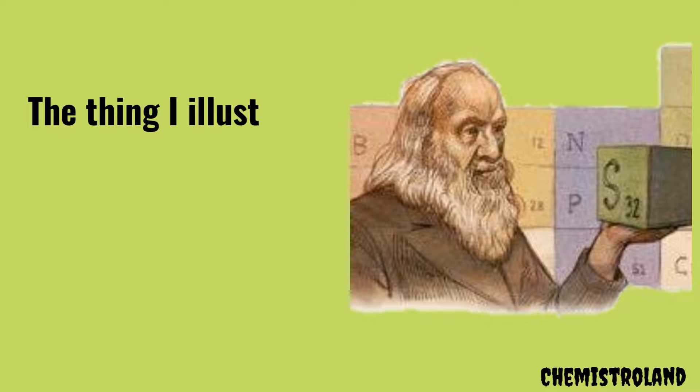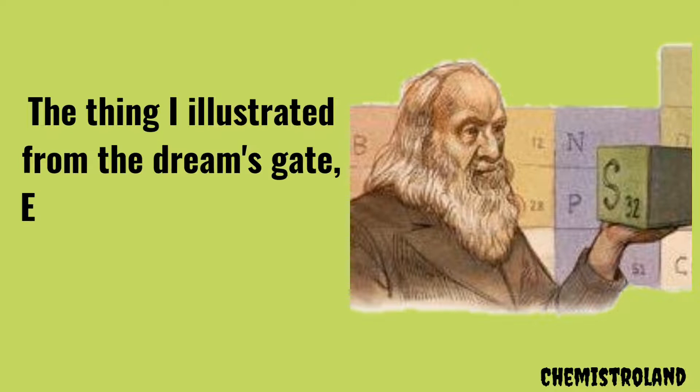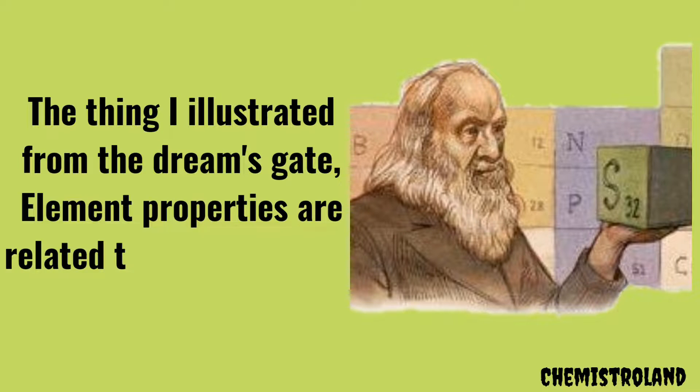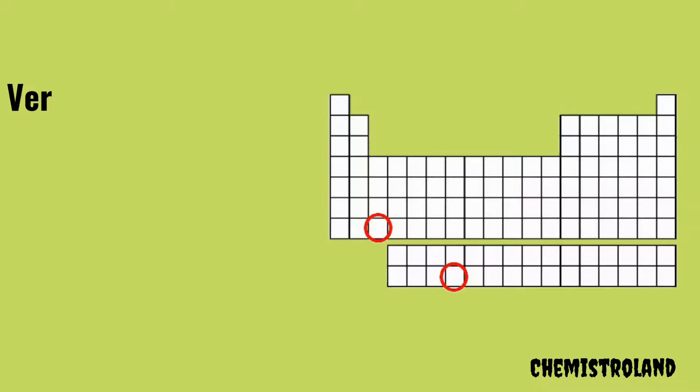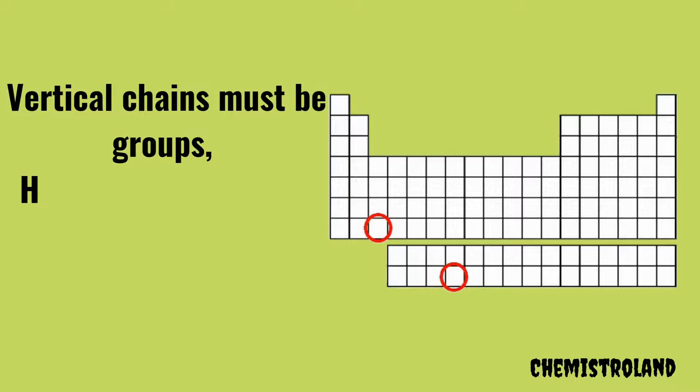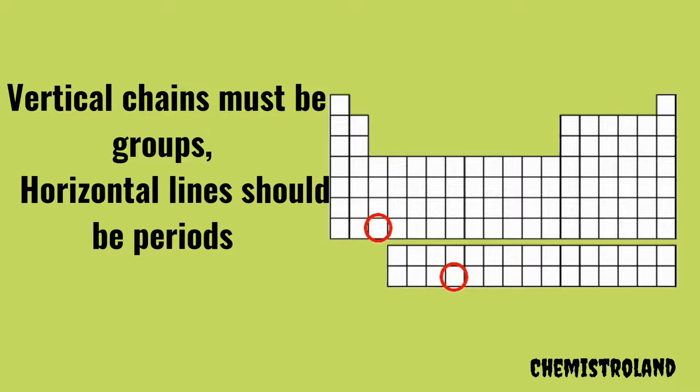The thing I illustrated from the dream's gate. Element properties are related to atomic weight. Vertical chains must be groups. Horizontal lines should be periods.